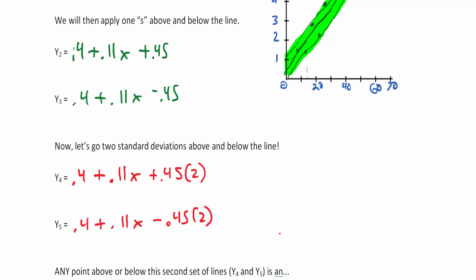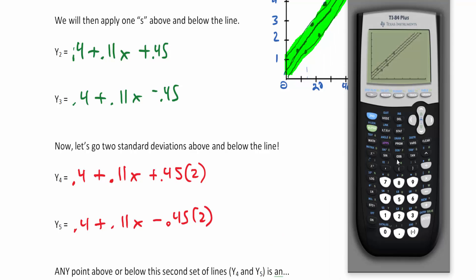Let me show you what's going to happen. We go to our calculator and y equals, and in list 4 we type in 0.4 plus 0.11x plus 0.45 times 2. You can use parentheses or the multiply key.